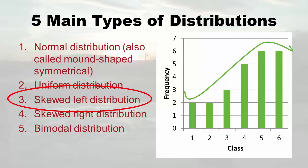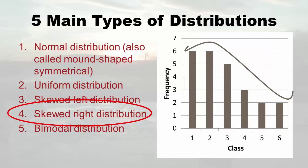This one looks like a playground slide — you climb up one side and slide down the other. When it's low on one side and high on the other, it's called skewed. How I remember which direction: it's skewed where it's light, meaning short. Here, it's light on the left, so it's skewed left. And skewed right is when it's light — short — on the right side.